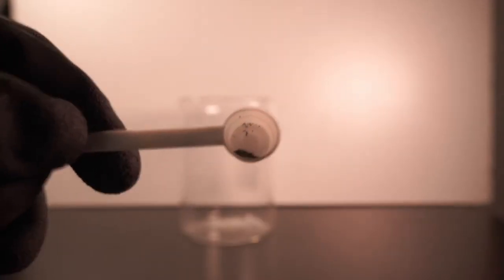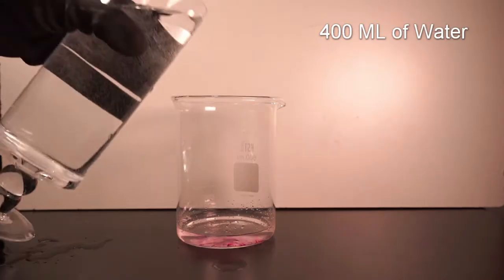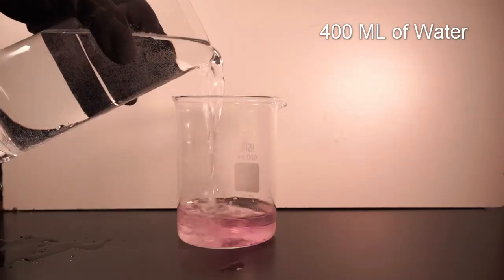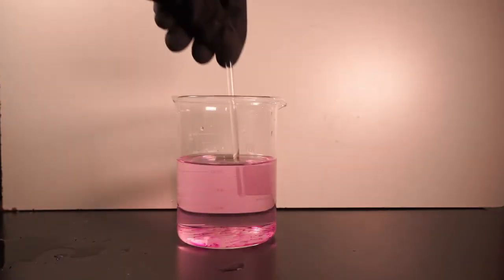Add a tiny amount of potassium permanganate into the beaker and fill it roughly with 400 milliliters of water. Stir it until all of the permanganate has dissolved.